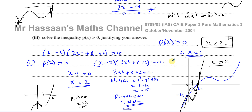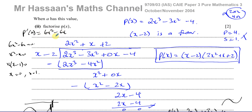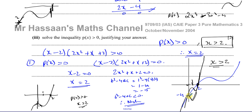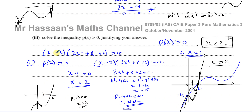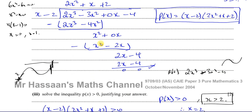To summarize: we solved the inequality by finding the zero at x = 2, showing the quadratic factor 2x² + x + 2 has no real roots (discriminant negative), and sketching the graph to see that P(x) > 0 when x > 2. We don't really need to go into more detail than that — it's only worth two marks. That's the answer to this question.